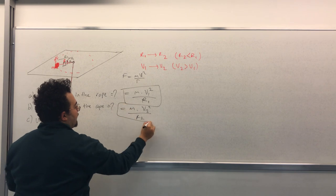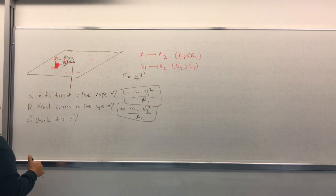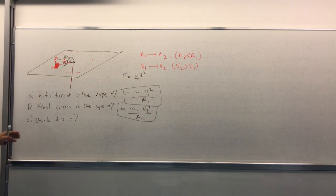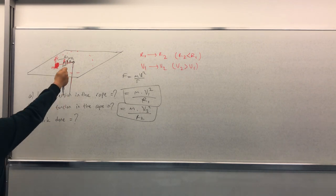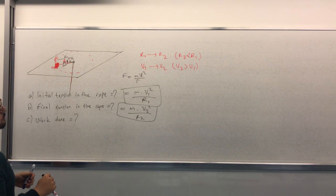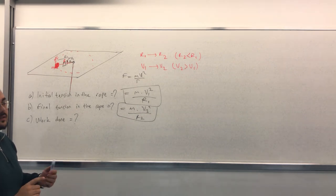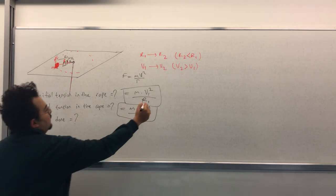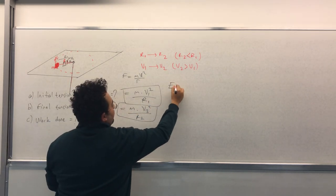So what's the work done while we pull the rope from the bottom? We need to calculate the energies for both final case and the initial case. So the initial equals to one half m v1 squared.